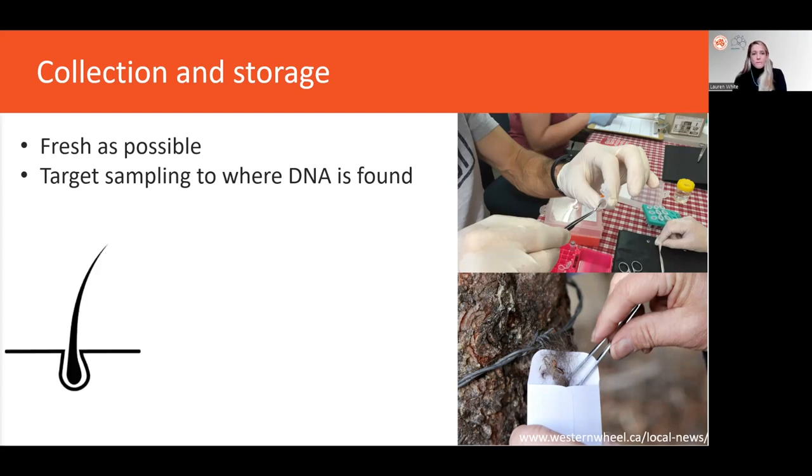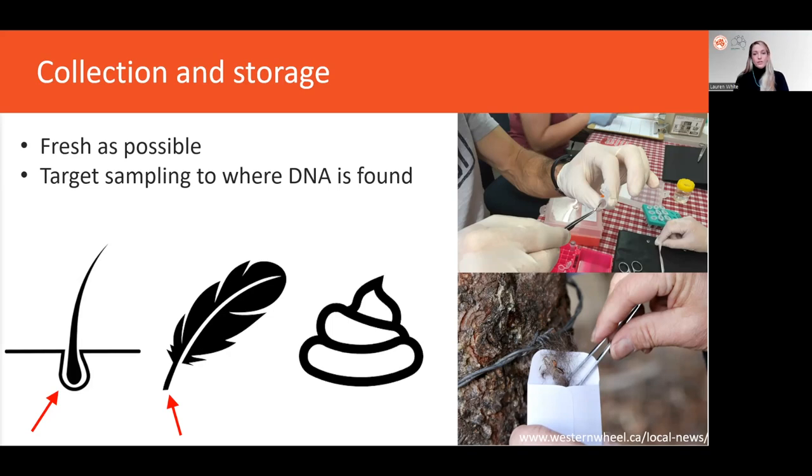Special consideration should also be taken about how to collect these samples and thinking about where the DNA is found within the samples. For example, in hair samples, most of the DNA is going to be found in the follicle. There's very little in the shaft. Similarly with feathers, most DNA is found in the tip. Finally, the general advice for collecting DNA from scat samples is to target the outside of the scat, where epithelial cells from the intestinal tract are expected to be concentrated.